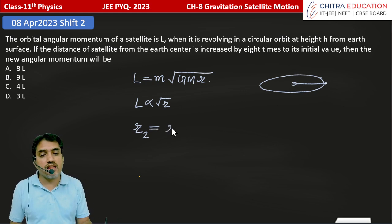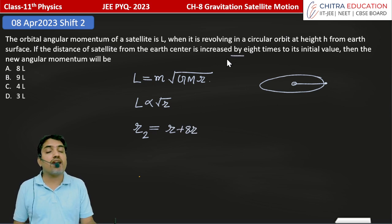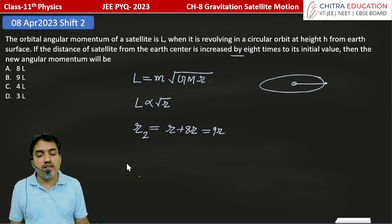So initially it was R, now we have increased it by 8R, increase by 8 times. So here what will it become? 9R.